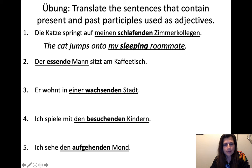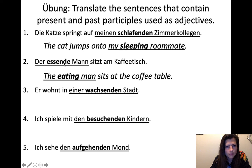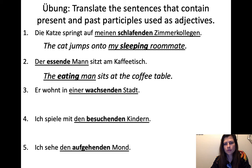Der essende Mann sitzt am Kaffee-Tisch. Essend is our participle here, with the -e ending because it's an adjective — nominative, masculine, singular. The eating man sits at the coffee table. Or: the man who is eating.